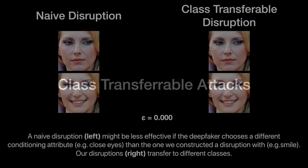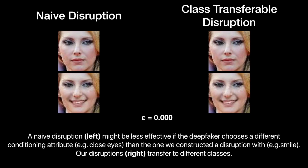Class transferable attacks. A naive disruption, shown on the left, might be less effective if the deepfaker chooses a different conditioning attribute — for example, close eyes — than the one we constructed a disruption with, for example, smile. Our disruptions, shown on the right, transfer to different classes.